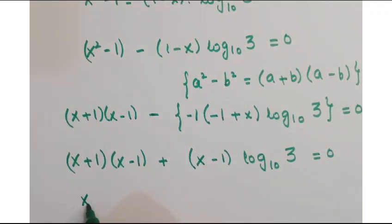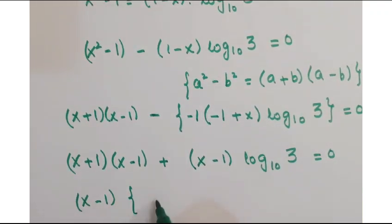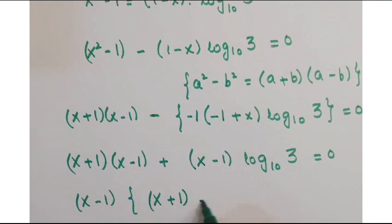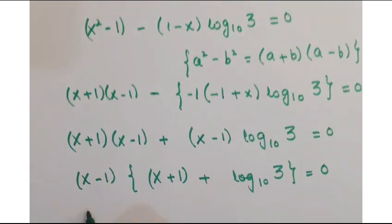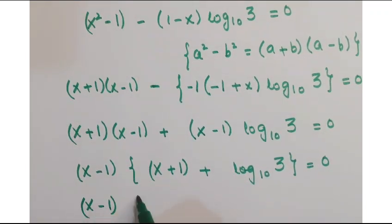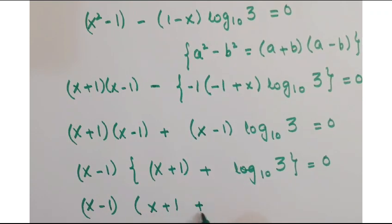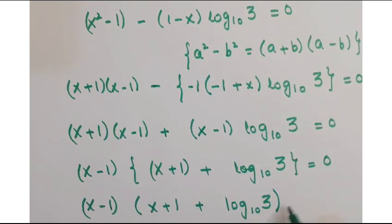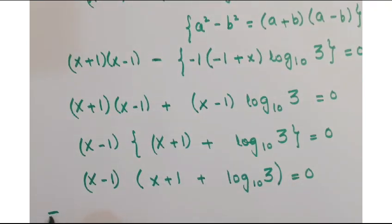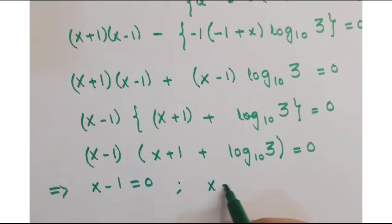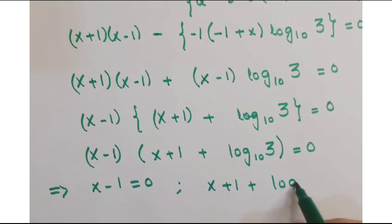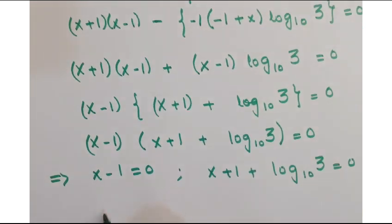Out of these two terms, take out x minus 1 common, so you are left with x plus 1 plus log of 3 to the base 10 is equals to 0. Further, you can write it as x minus 1 into x plus 1 plus log of 3 to the base 10 is equals to 0. This implies x minus 1 is equals to 0, so we get x is equals to 1. This is one solution of x.